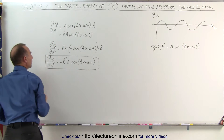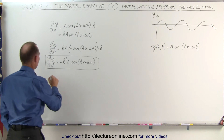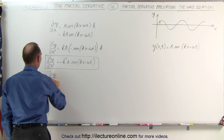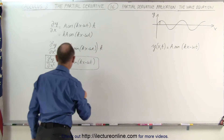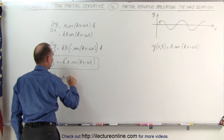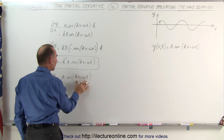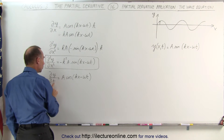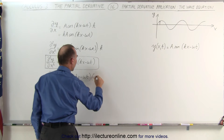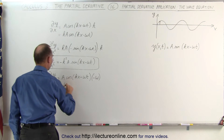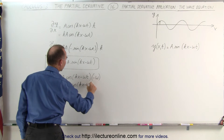Now we're going to take the partial derivative of the equation with respect to t. The partial of y with respect to t is equal to: we take the derivative, which is A times the cosine of kx minus omega t, times the derivative of the angle. But in this case it's with respect to t, so kx becomes zero, and it's times minus omega. This becomes minus omega A times the cosine of kx minus omega t.